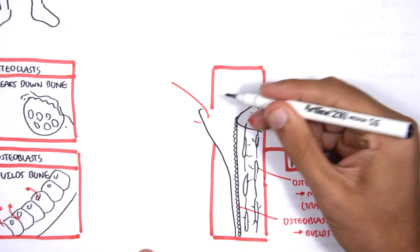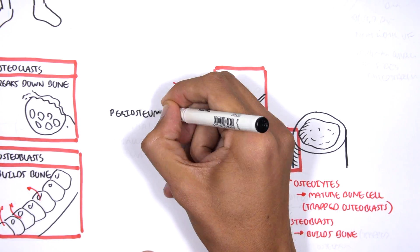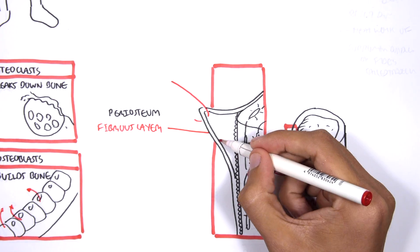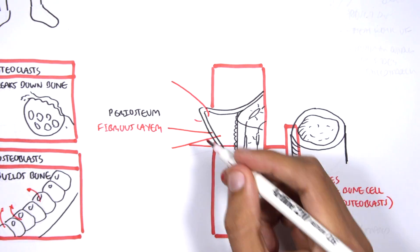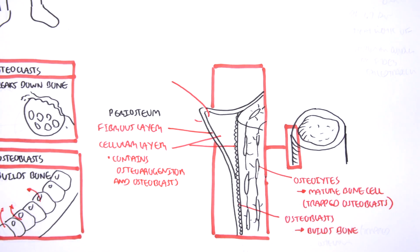Surrounding the compact bone altogether is a layer called the periosteum. The periosteum is separated into a fibrous layer and a cellular layer, which is the layer where we find the osteoprogenitor cells and osteoblasts.